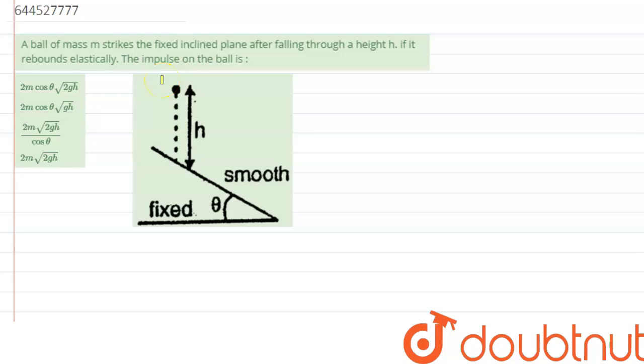Hi everyone, so we are given with a question which says, a ball of mass small m strikes the fixed inclined plane after falling through a height h.